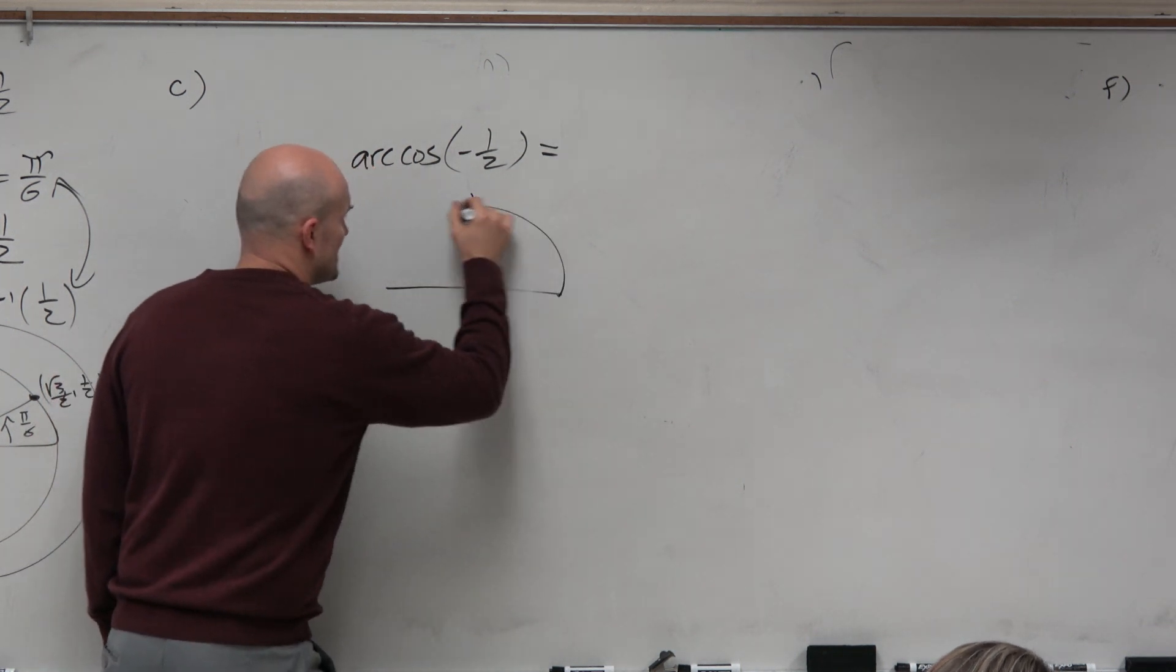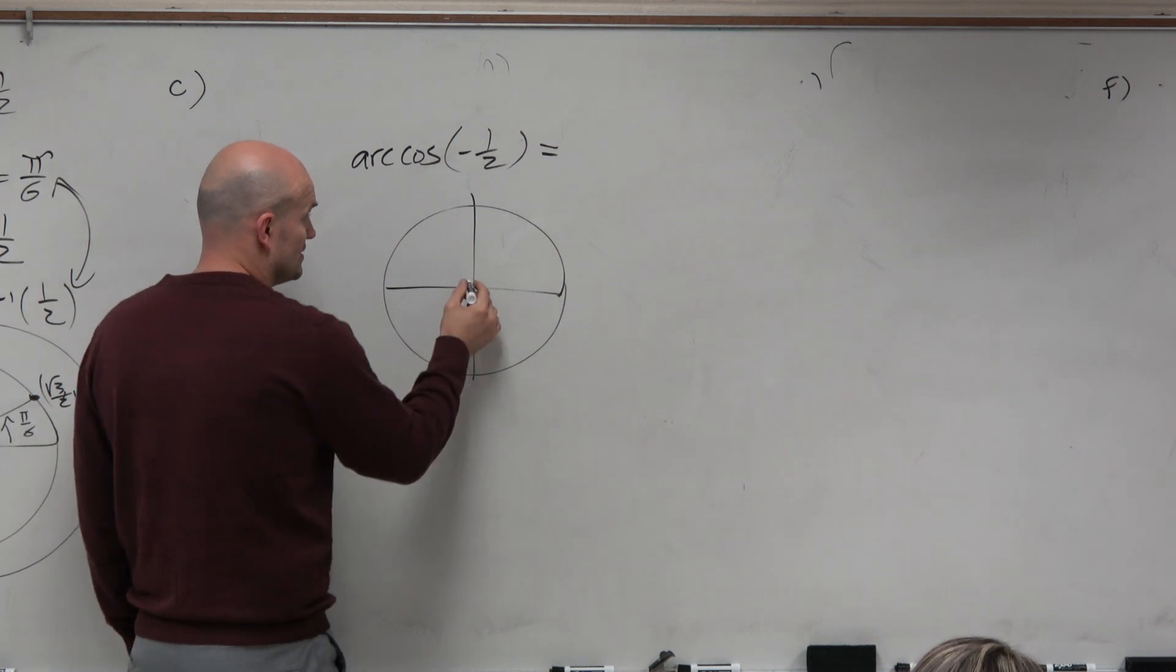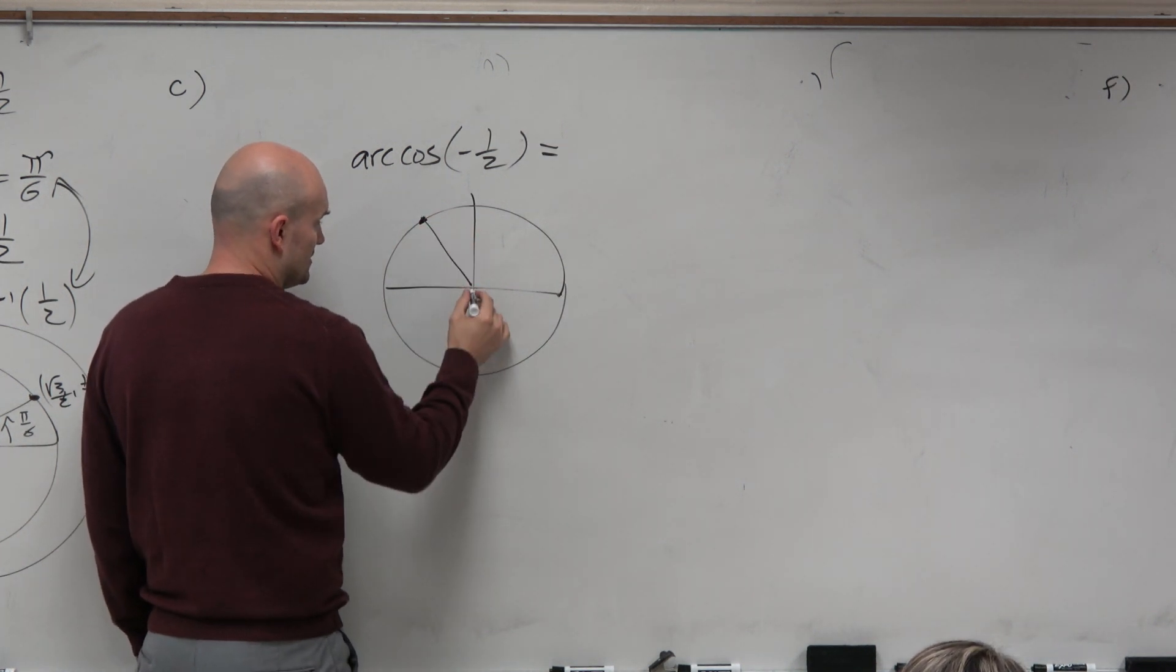So I say, all right, when is cosine going to equal negative 1 half? Remember, cosine of an angle is the x-coordinate. Well, I think it's going to be up here and down here.